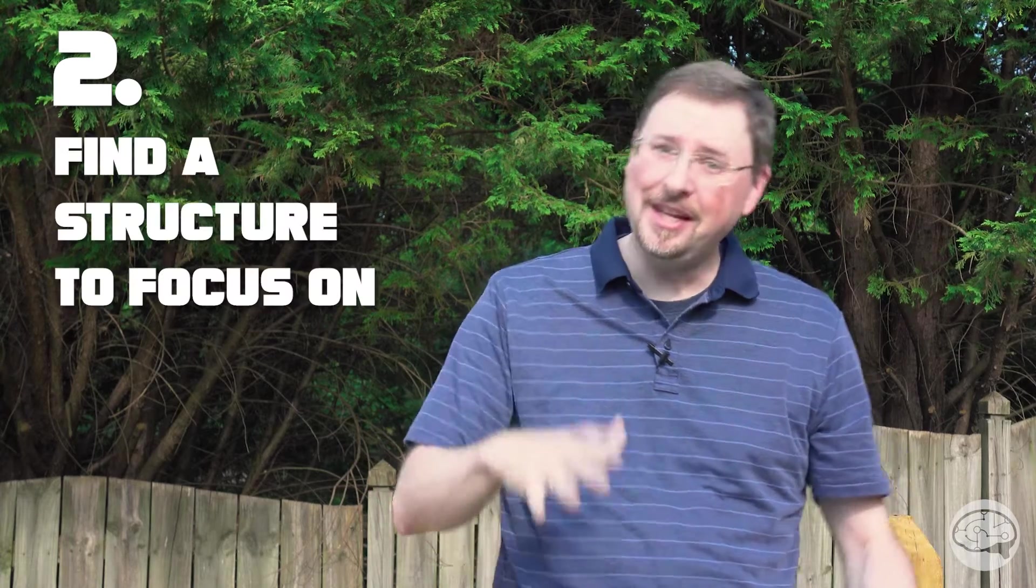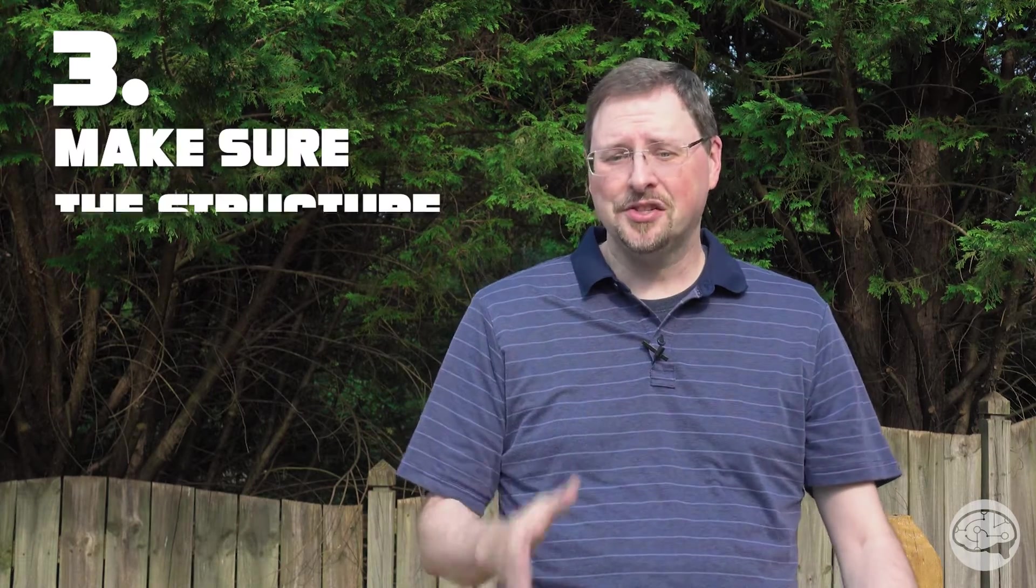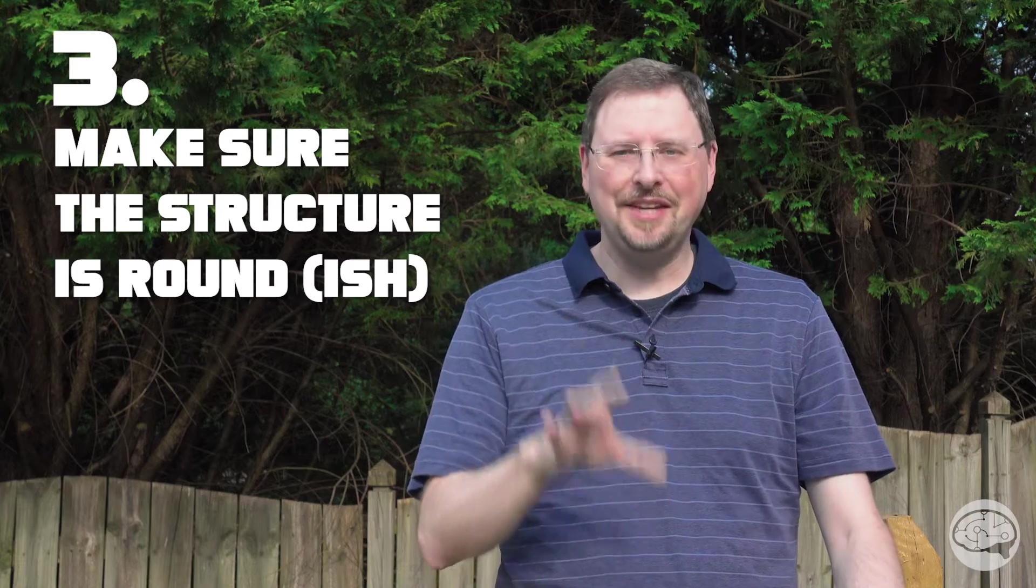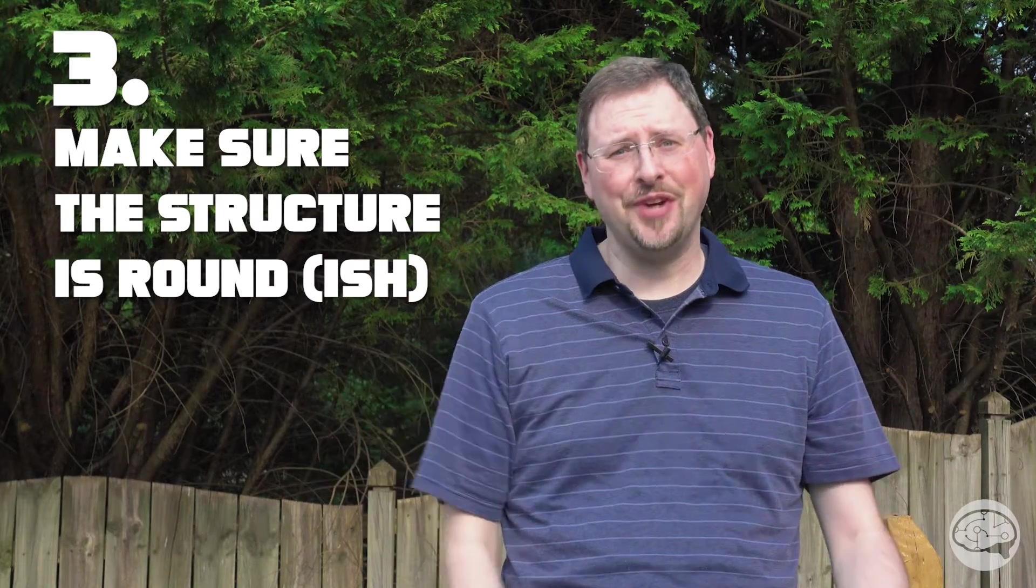Number two, we can't do this on a flat or featureless area of the sample. We need to find a structure of some kind. Number three, this structure should not be square or have straight edges on it. Straight edges are going to fool you into thinking that things are aligned or in focus inside the microscope when they're not. So what we need, ideally, is something that's round, or at least roundish. Stay away from straight edges.